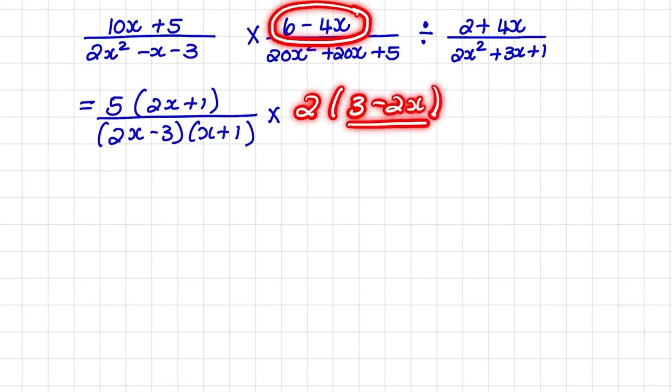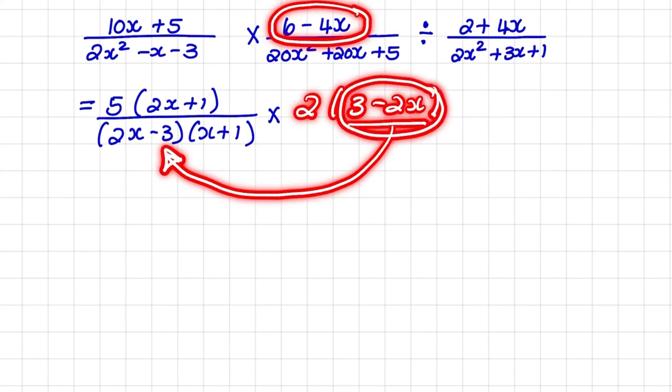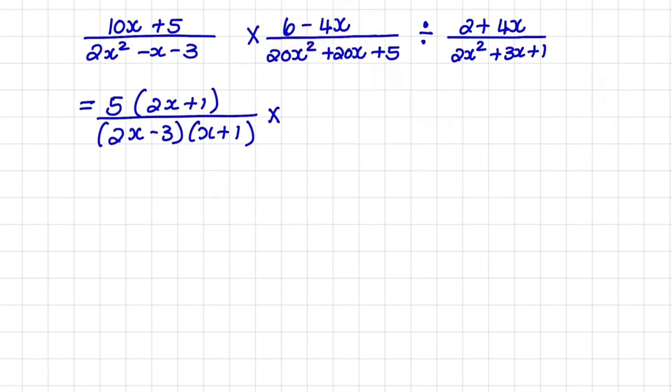I notice that this bracket of 3 minus 2x looks very similar to 2x minus 3. So I'm asking myself, how can I write 3 minus 2x to be 2x minus 3? And I notice that it will be better for me to take out a negative 2. That will lead to a bracket of 2x minus 3.